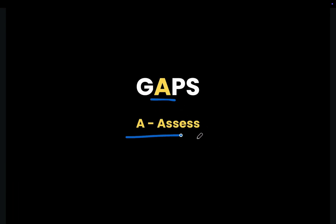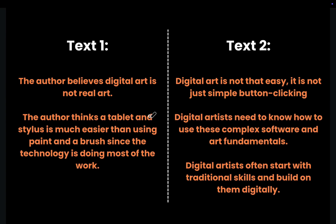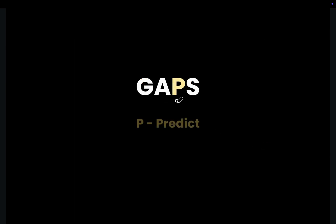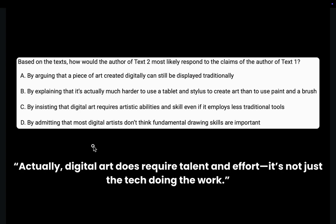Now let's move on to A — Assess both sides. Text 1 says a tablet and stylus is much easier than paint and a brush since the technology is doing most of the work. Text 2 says digital artists need to know how to use complex software and art fundamentals. Moving to P — Predict: what would Text 2's author say back to Text 1? It would probably be something like: actually, digital art does require talent and effort — it's not just the tech doing the work.